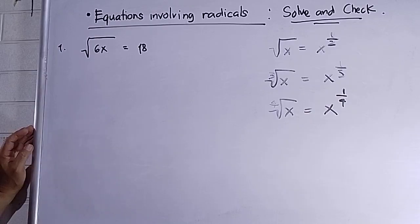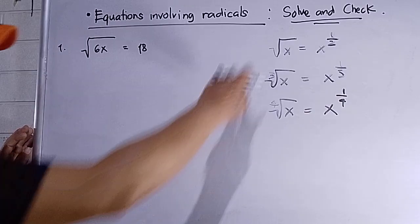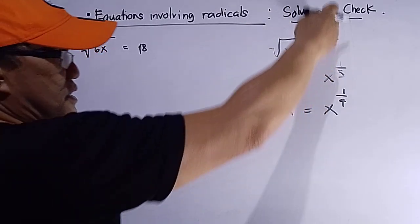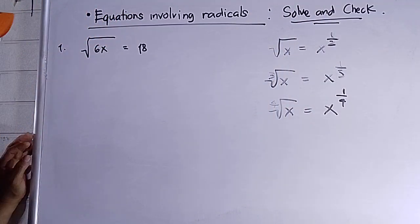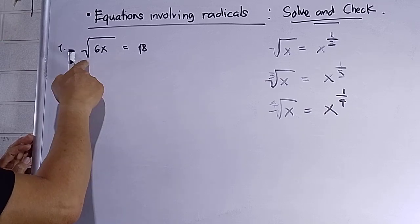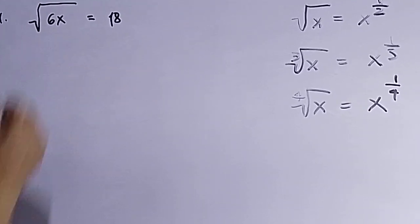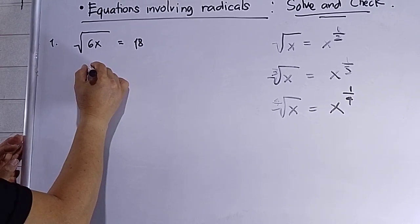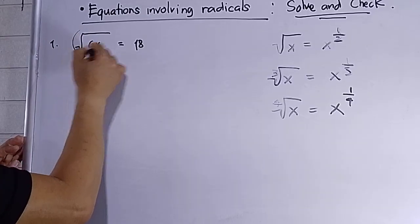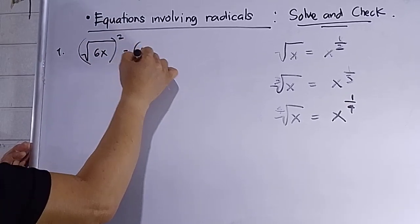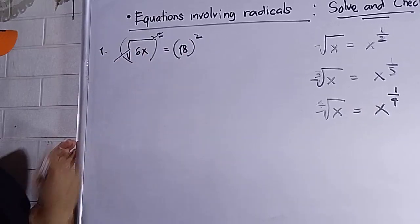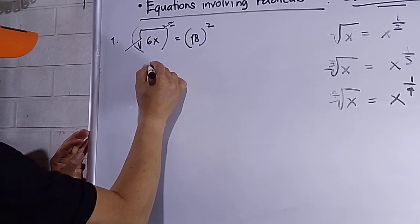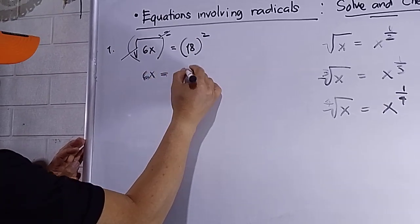Here is example number one. This shows the radical form and the exponential form. Solve and check number one: square root of 6x equals 18. To solve, I need to eliminate the radical sign by squaring both sides.